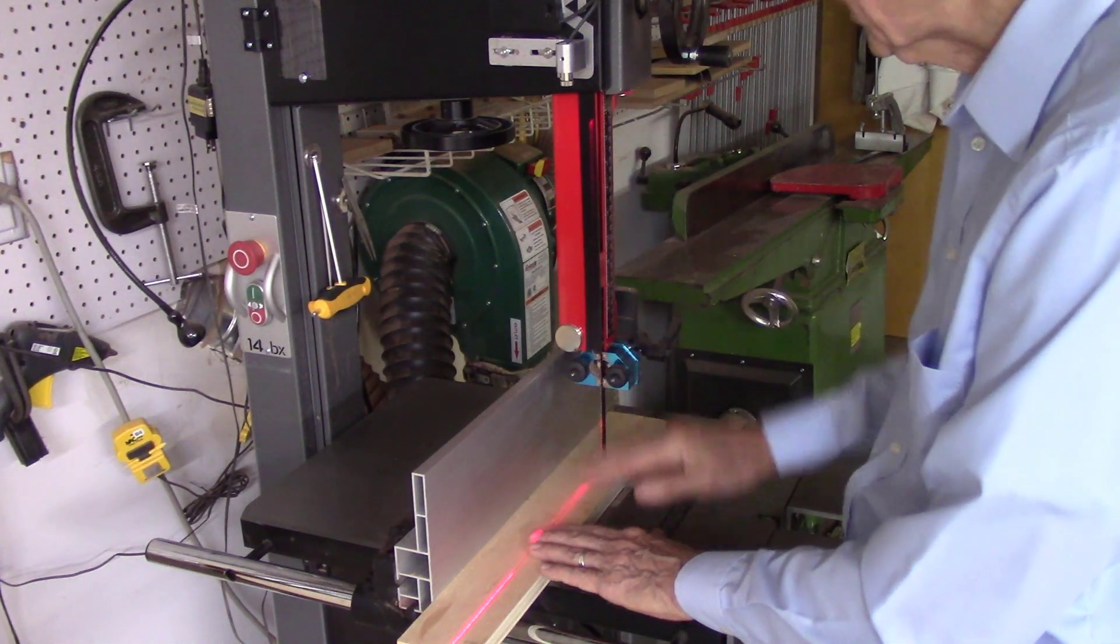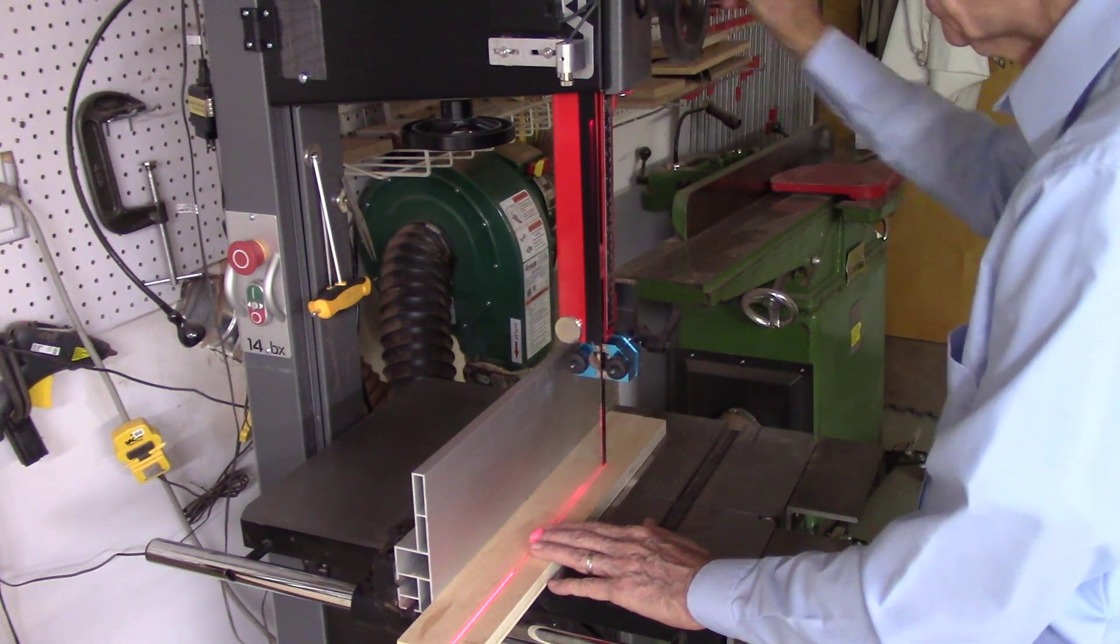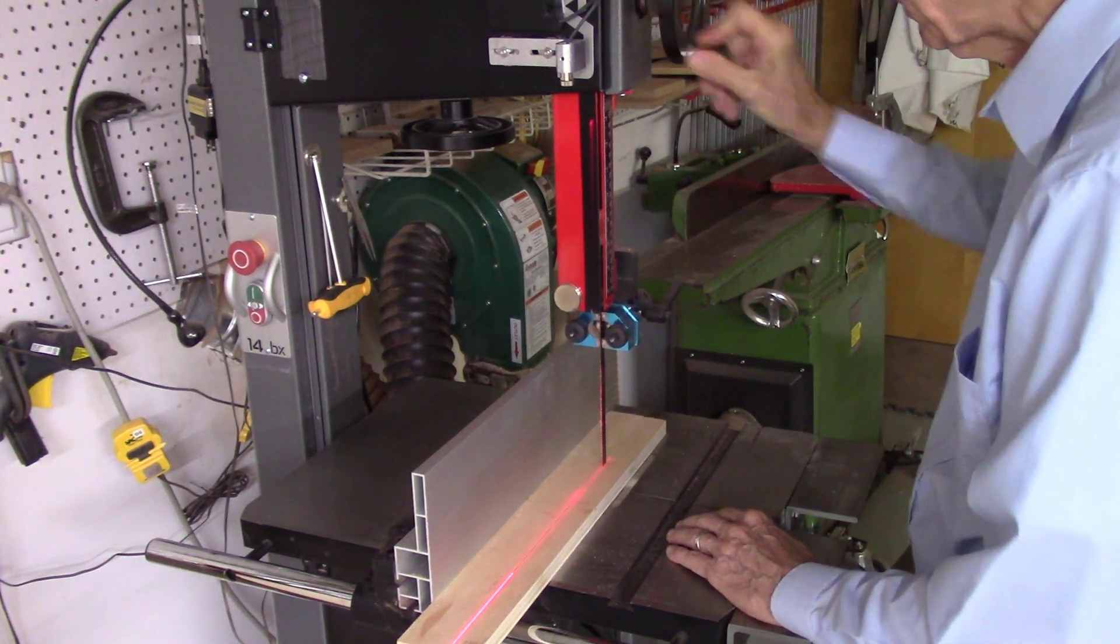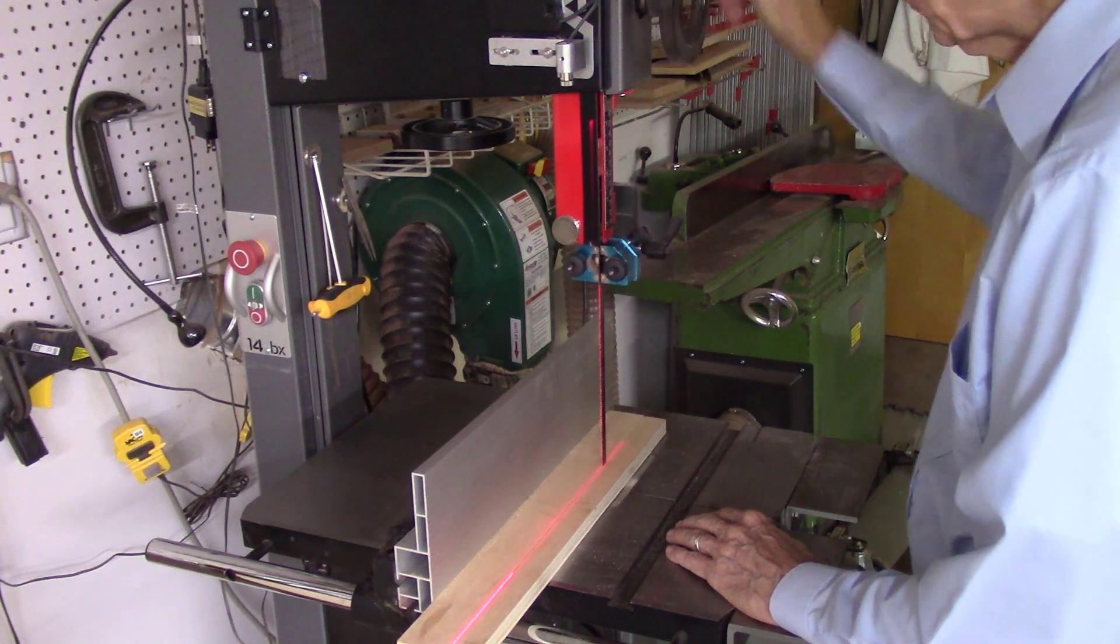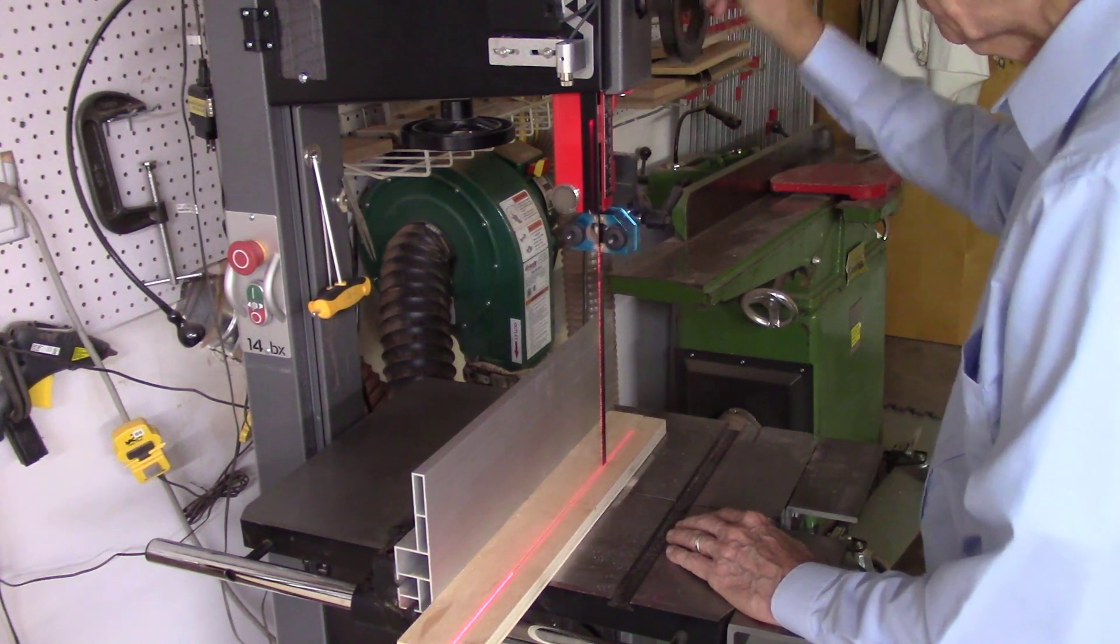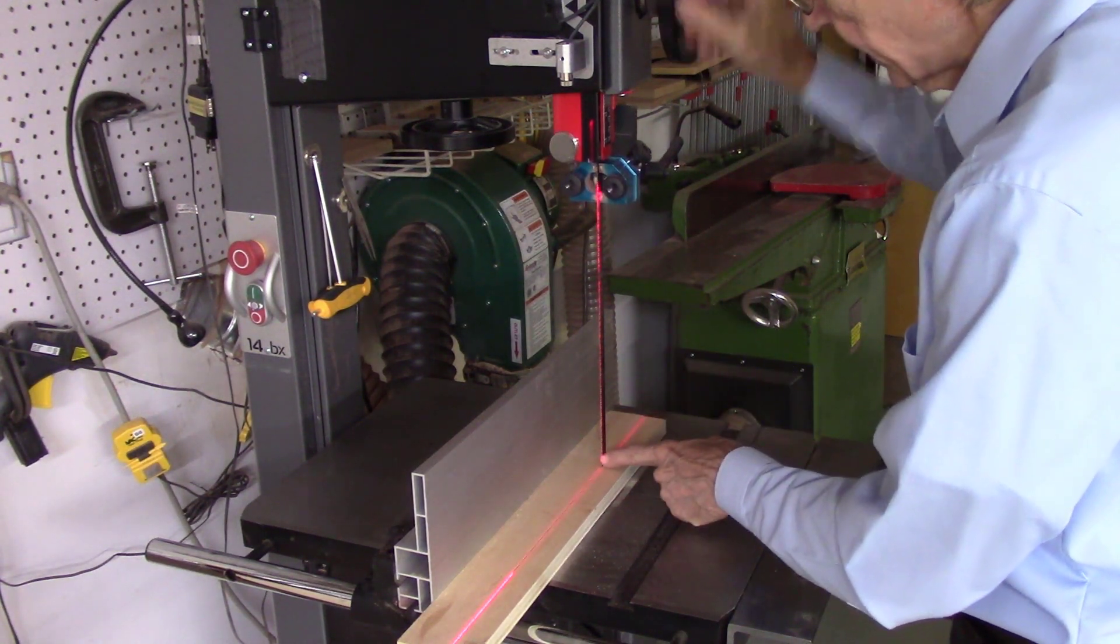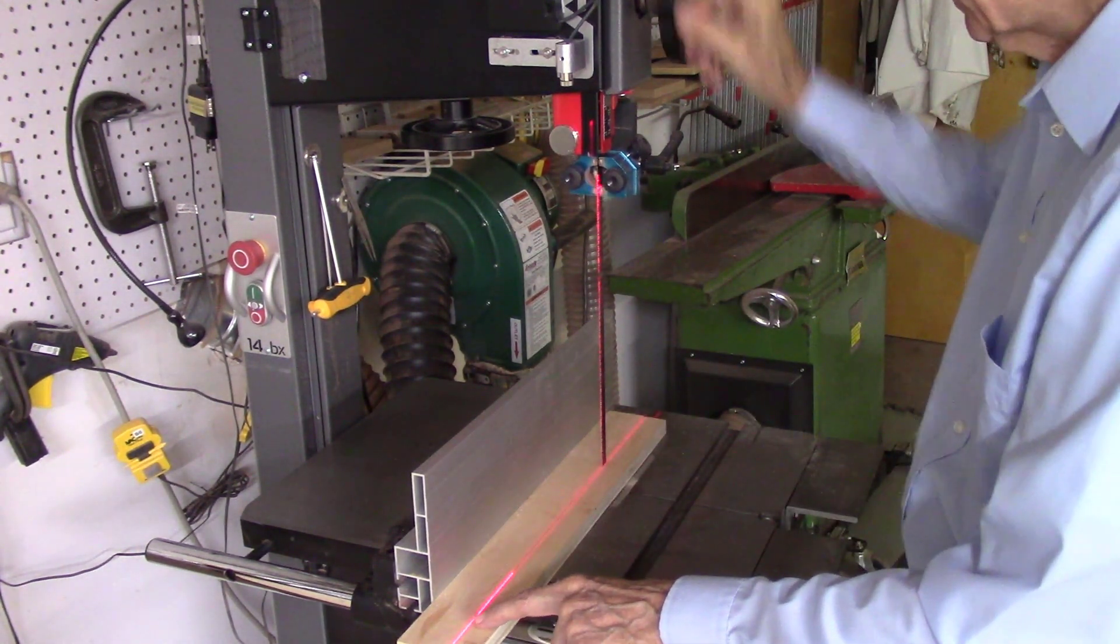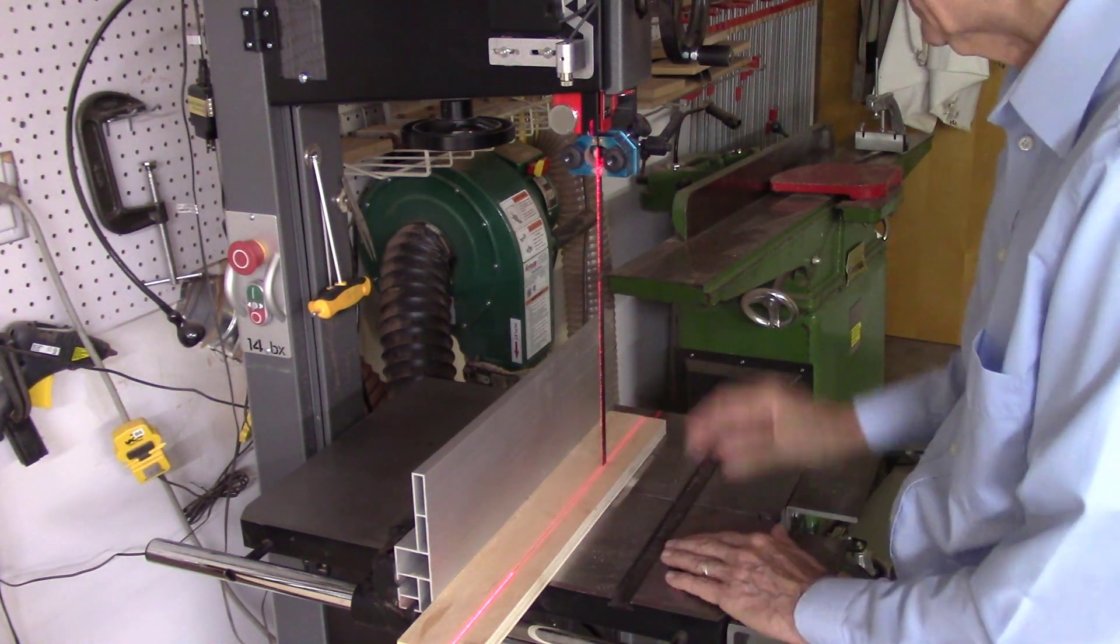To align the bandsaw laser beam, you first of all raise your blade guide. You want to expose as much of the bandsaw blade as possible. I am projecting that laser beam down the teeth of the blade and down the path of my cut through my board. That way no matter what thickness of the board, the laser beam will always be accurately aligned.